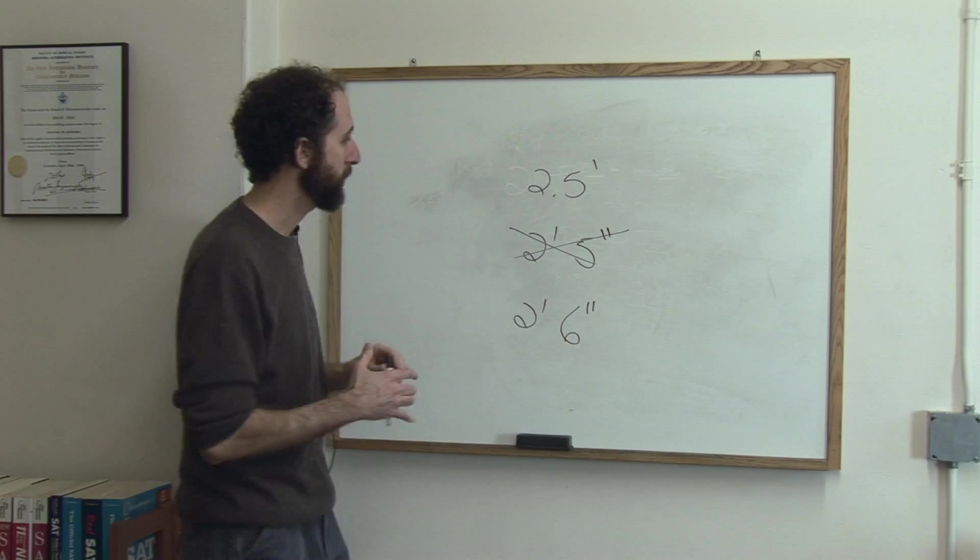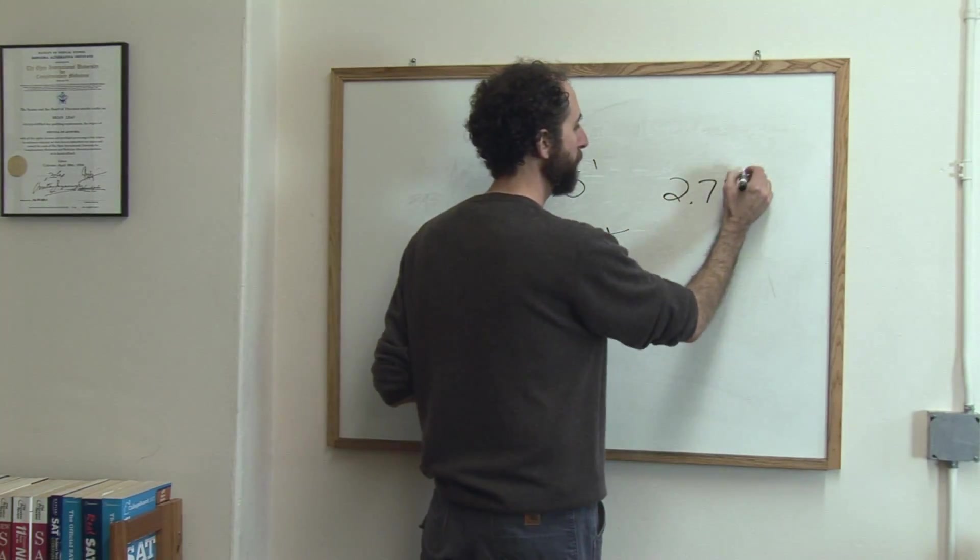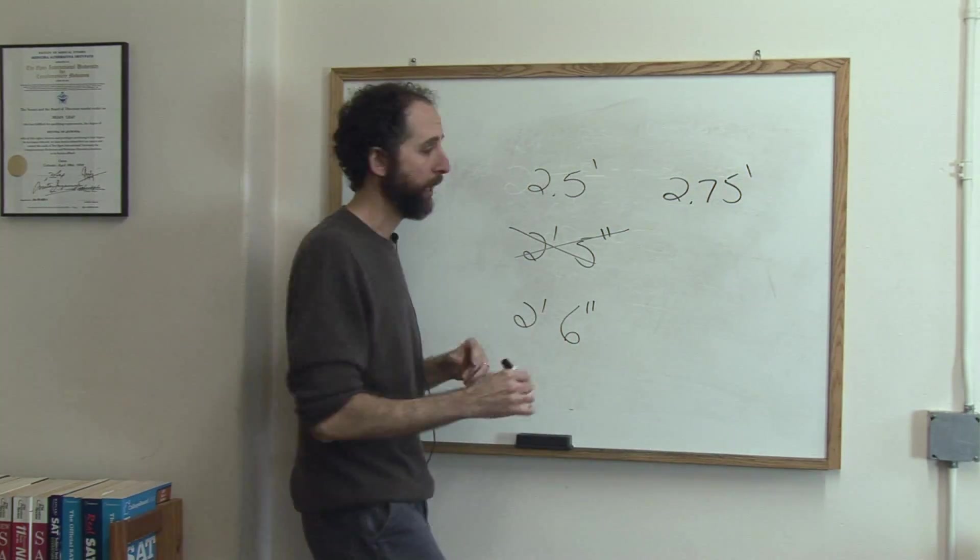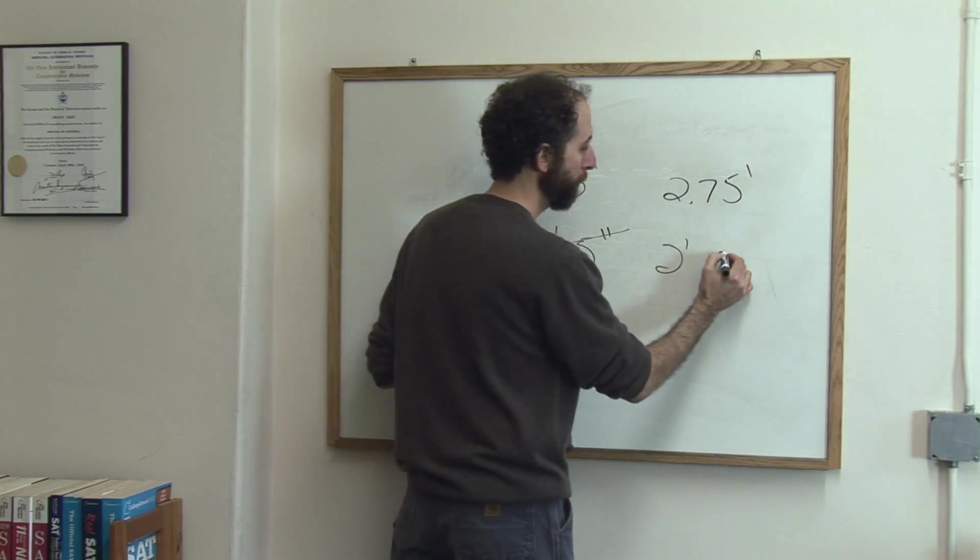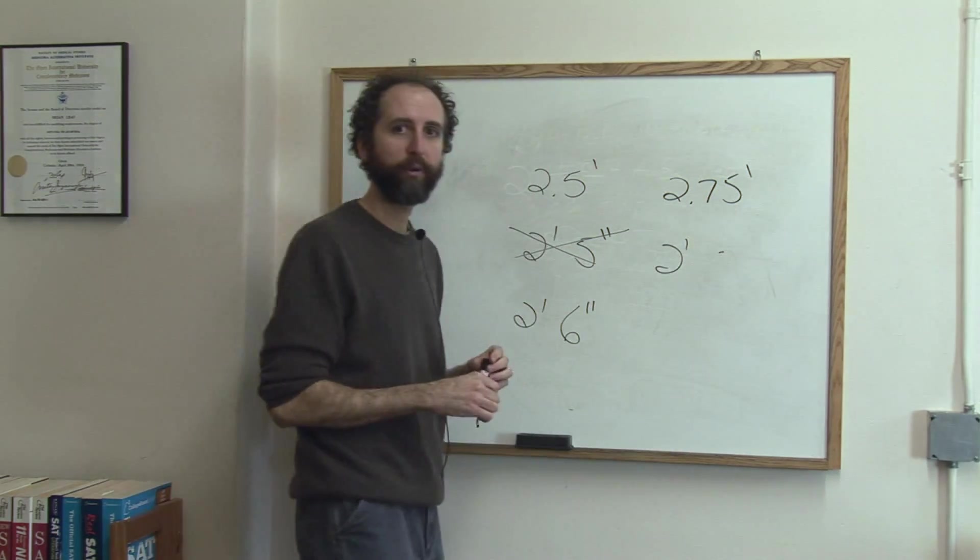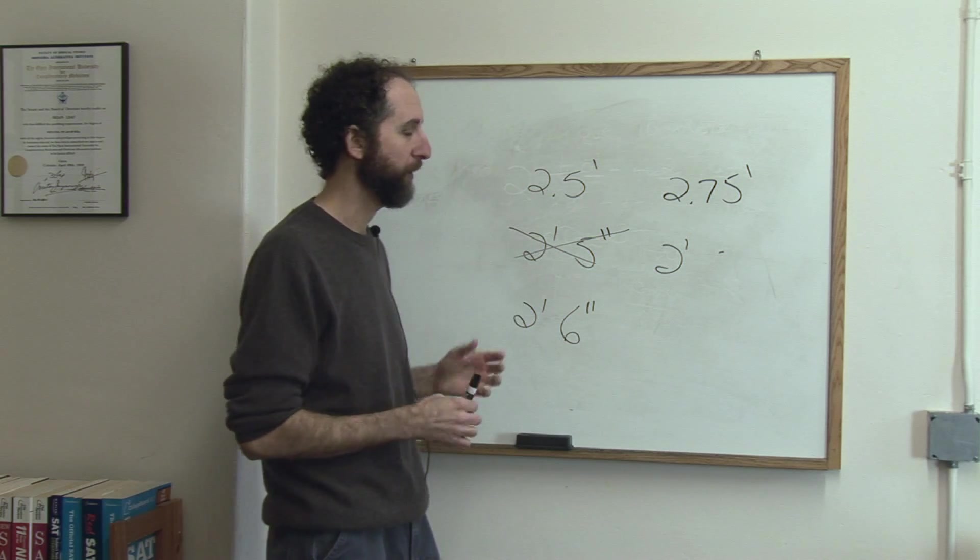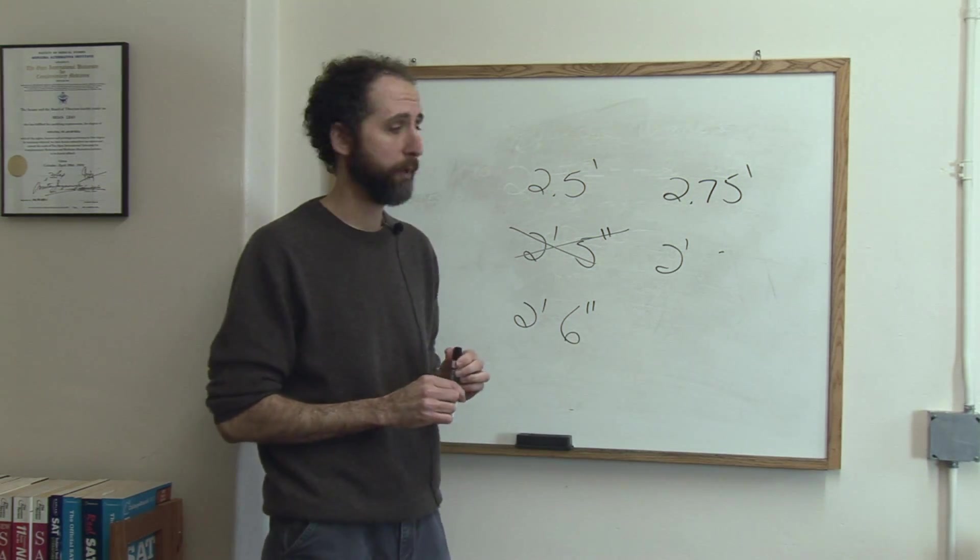Let's take another one. Let's take 2.75 feet. Same thing. A lot of people want to say 2 feet point, or this one's even weirder to actually use your decimal. If you said 75 inches, that's obviously wrong. Or .75 inches, that's wrong.